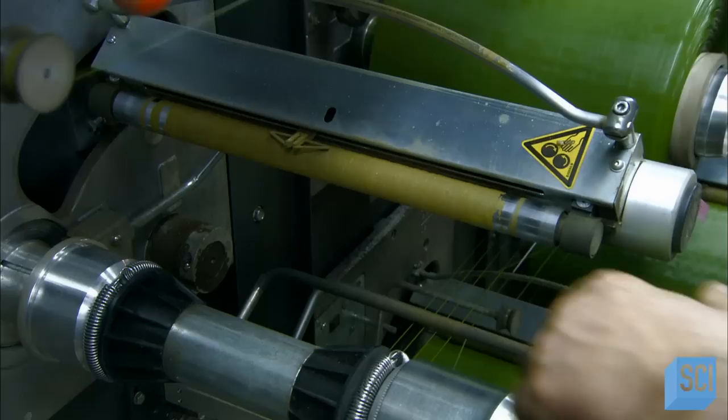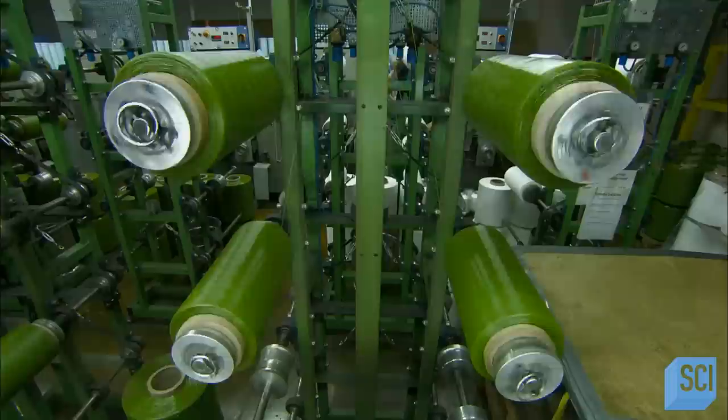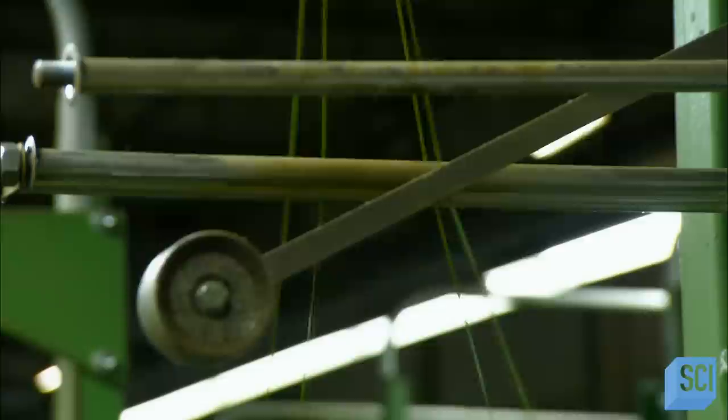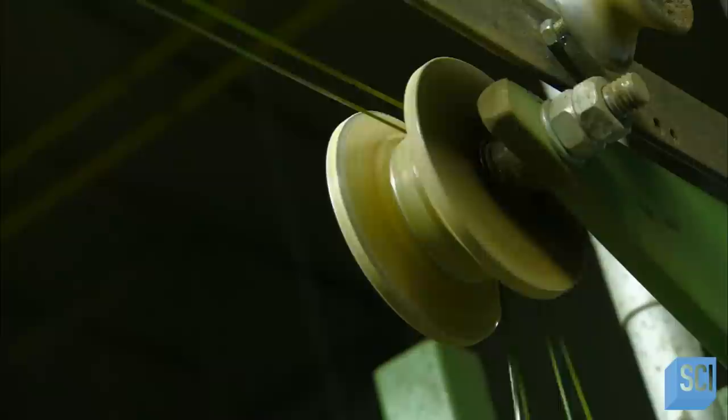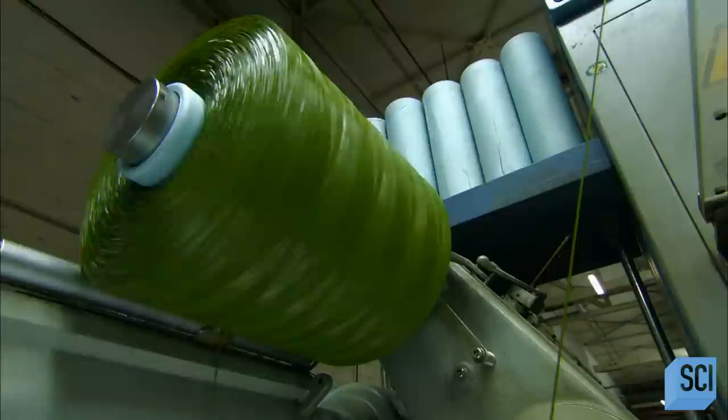Once a spool is full, they remove it. Next, they unwind several spools at a time. The strands come together to form a multi-ply synthetic yarn. The yarn travels over guides. This keeps it from slackening as a big spool winds it up.